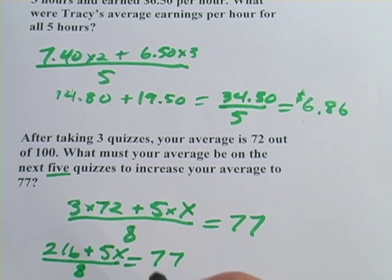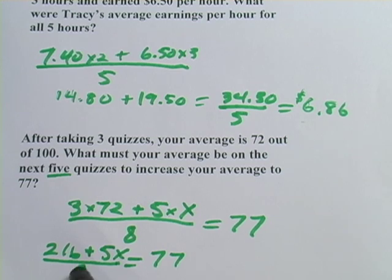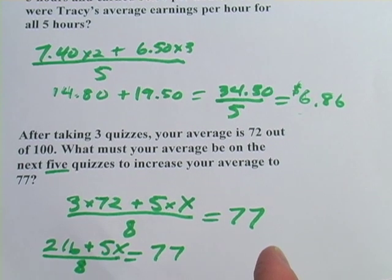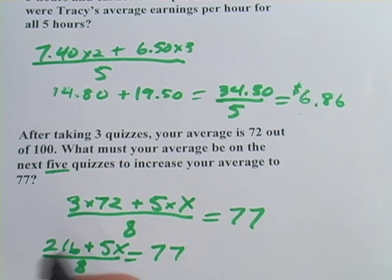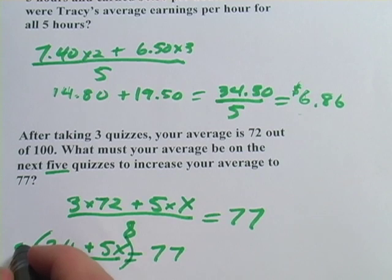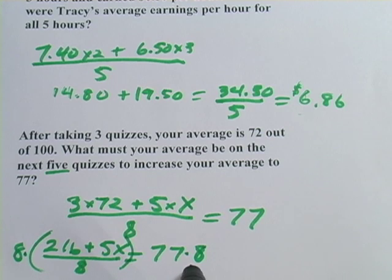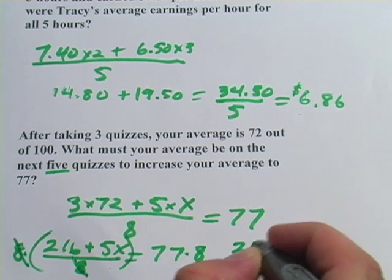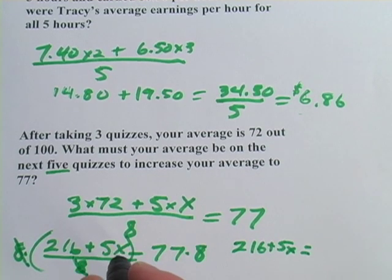Here's where it gets tricky — we've got some algebra to do. We want to get this 5x alone, so we have to undo everything done to it. The first thing is to get rid of the 8 on the bottom. To undo dividing by 8, we multiply both sides by 8. On the left side those 8s cancel out, and on the right side we get 77 times 8. So we have 216 plus 5x equals 616.